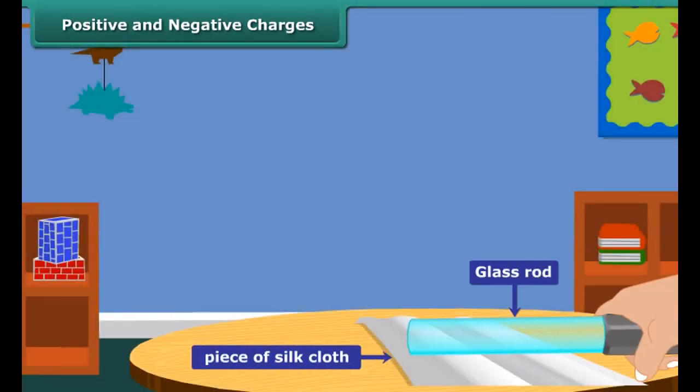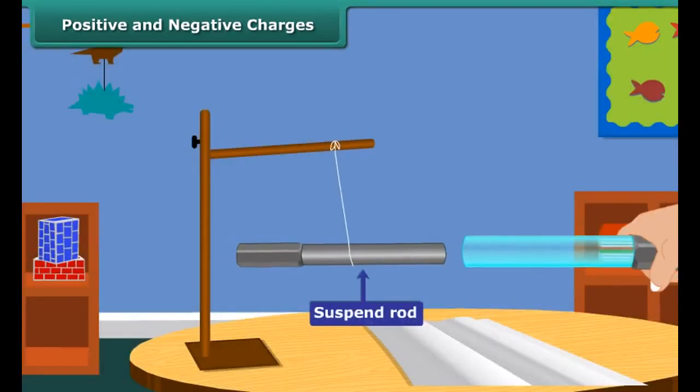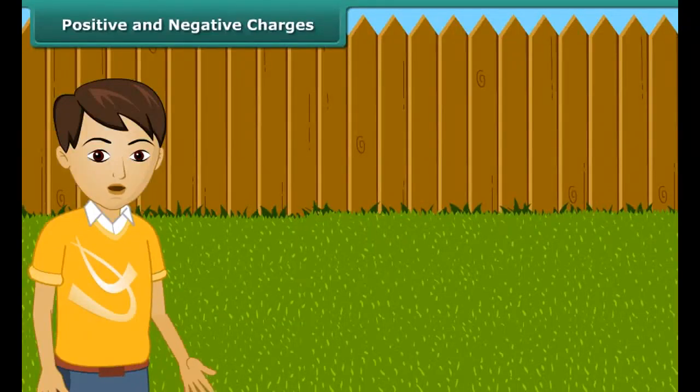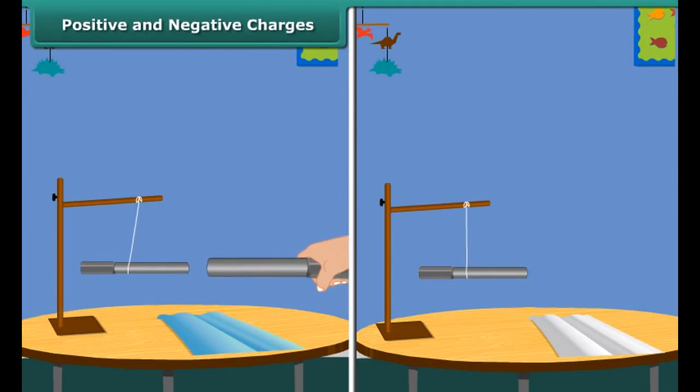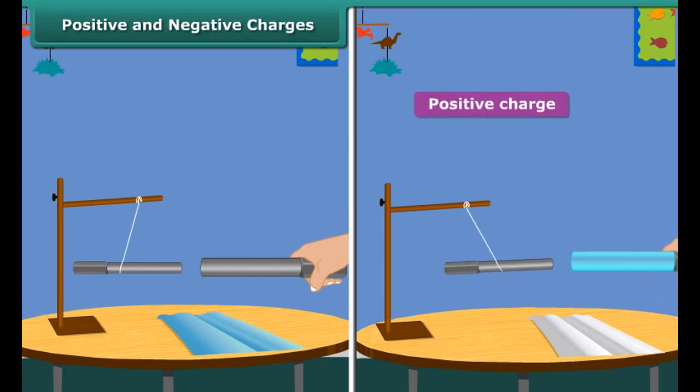Now take a glass rod and rub it with a silk cloth. Bring this glass rod close to the charged suspended ebonite rod. What do you observe now? The suspended ebonite rod comes closer to the glass rod. The charges produced in the ebonite and the glass is different in nature.